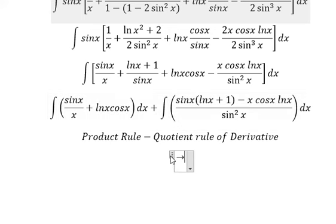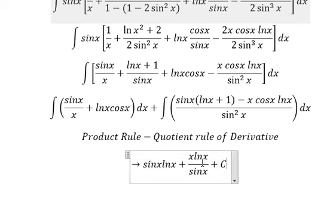And you got the final answer. That should be lnx multiplied with sinx plus xlnx over sinx plus C. This is the final answer of the question. That is the end. Thank you for watching.